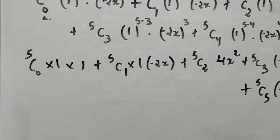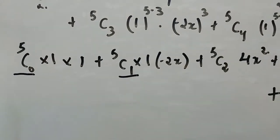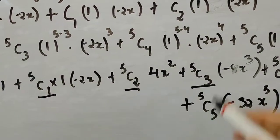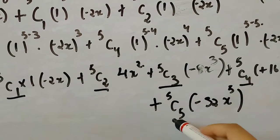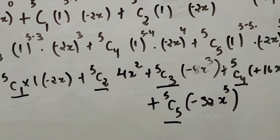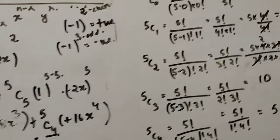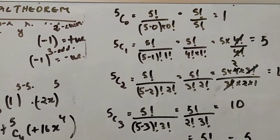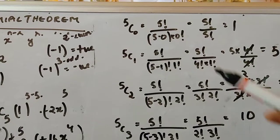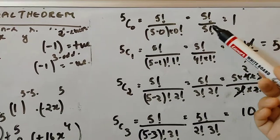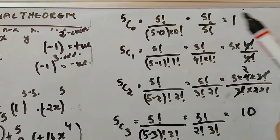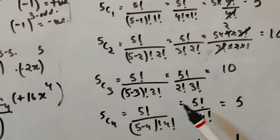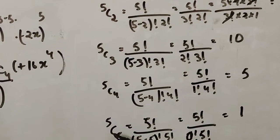Now we need to find the values of 5C0, 5C1, 5C2, 5C3, 5C4, and 5C5 using the combination formula. The values are: 5C0 equals 1, 5C1 equals 5, 5C2 equals 10, 5C3 equals 10, 5C4 equals 5, and 5C5 equals 1.